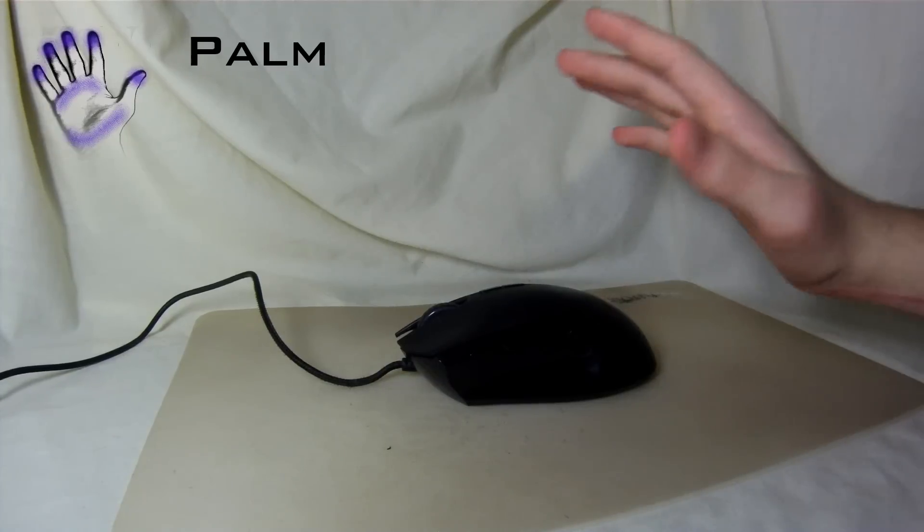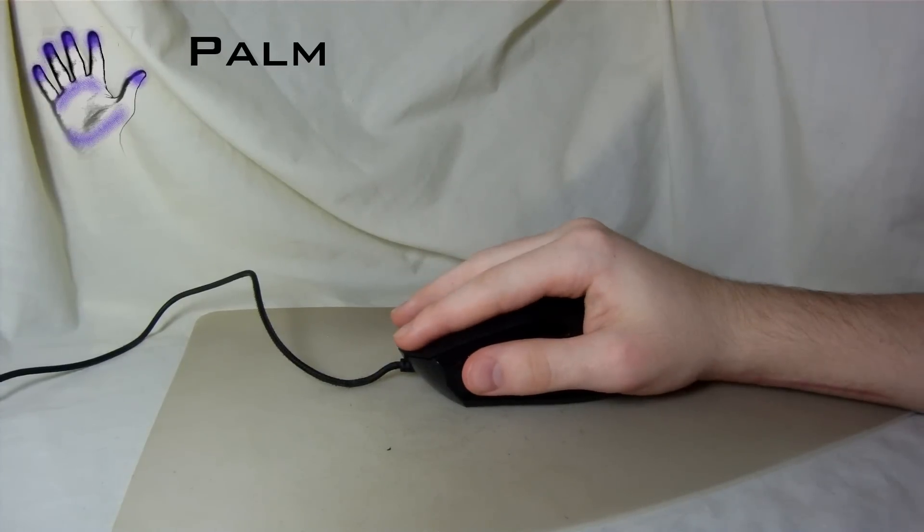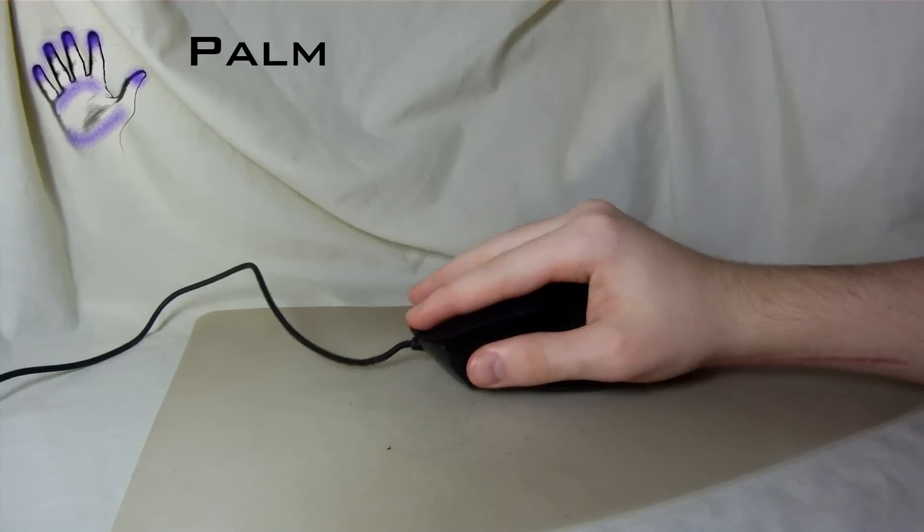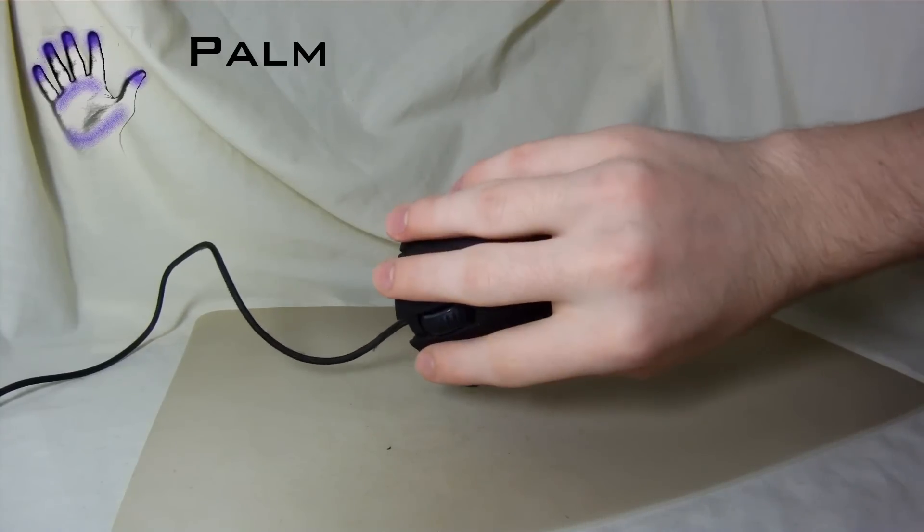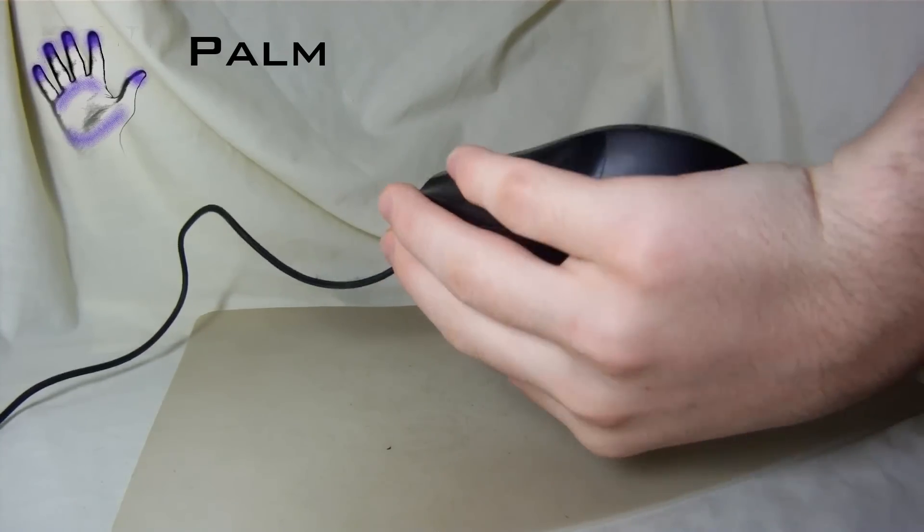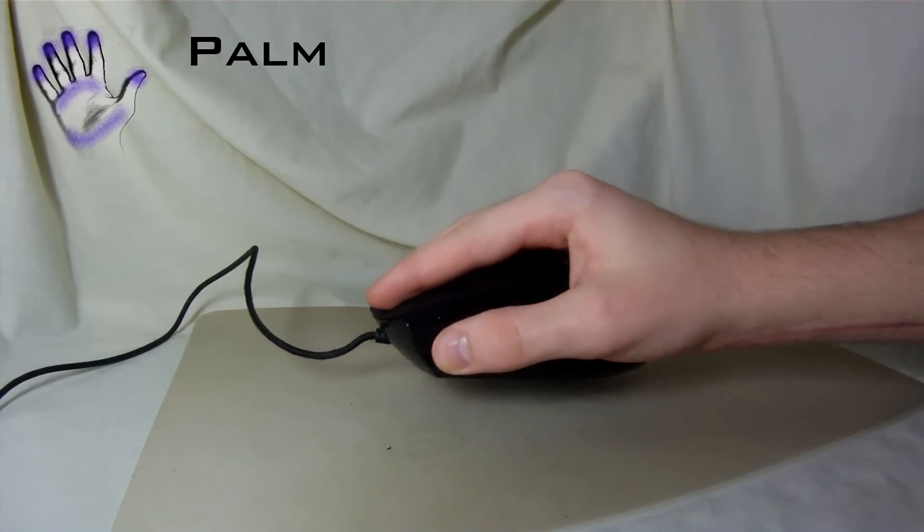The palm grip is the most natural feeling and the most commonly used. When using the palm grip, your entire hand will be on the mouse, creating seven points of contact. This grip is very comfortable and the least fatiguing.